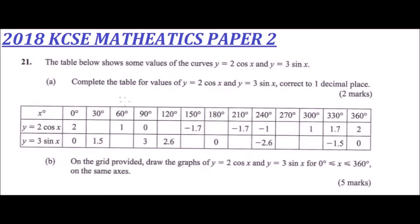This is the 2018 KCSE Mathematics Paper 2, Question 21. The table shows some values of the curves y = 2cos(x) and y = 3sin(x). Complete the table for the values of y = 2cos(x) and y = 3sin(x) correct to one decimal place.